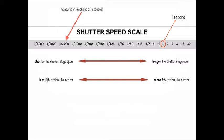These shutter speeds are measured in fractions of a second. Once you get down to the whole number one, that's one second, then two seconds, four seconds, eight, fifteen, and thirty seconds. With faster shutter speeds the shutter stays open a shorter amount of time, and with longer shutter speeds the shutter stays open longer.